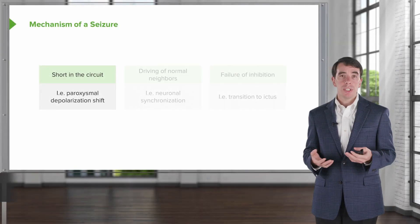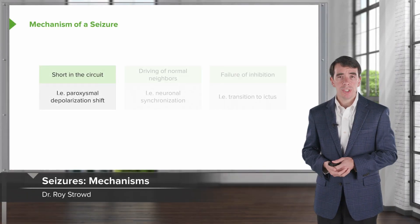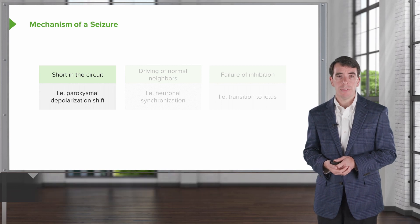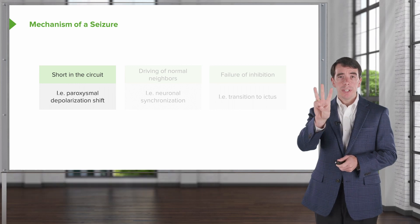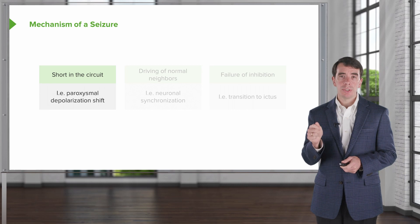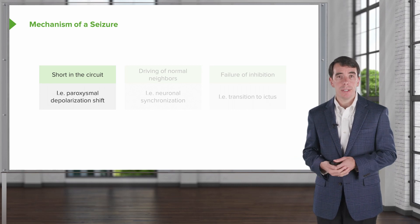So if those are the types of seizures, what's going on when we see a seizure? What's the mechanism underlying seizure development? Well, there's really three things that happen in the brain to result in a seizure and epilepsy.